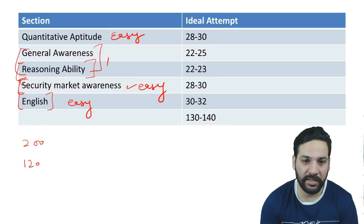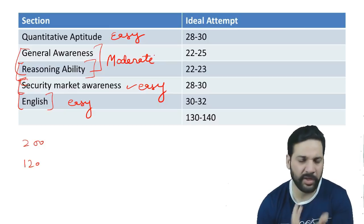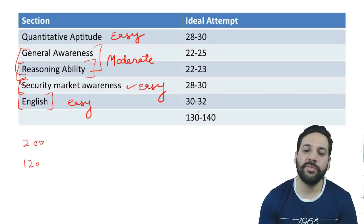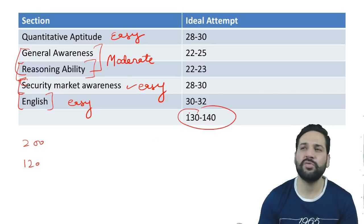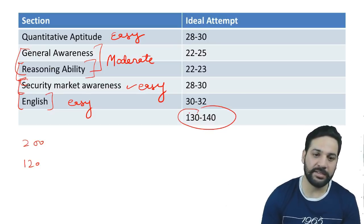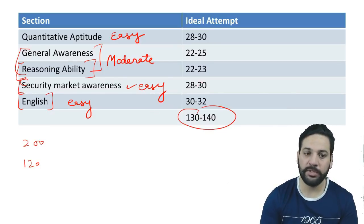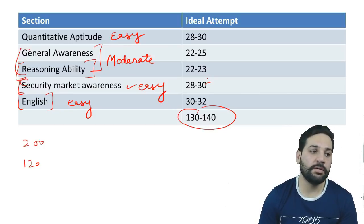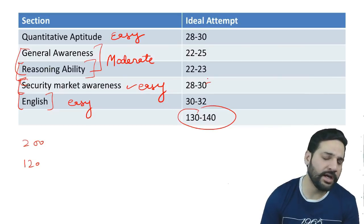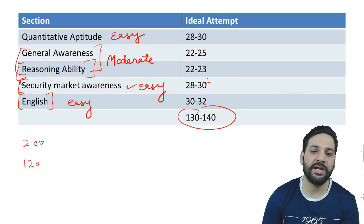The difficulty was moderate — not actually hard, moderate is the right word. The ideal attempt according to me should be between 130 to 140. Security Market Awareness is easily doable if you have completed your syllabus — there were no difficult questions at all, the questions were easy. Even in English, if you are reading a newspaper every day, it was not that difficult.